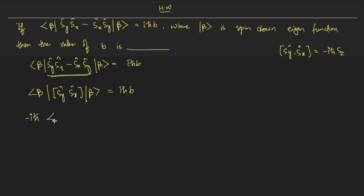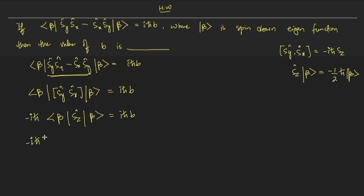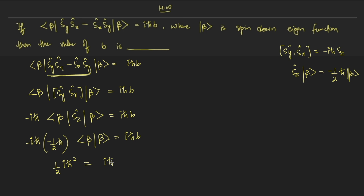So minus i and ℏ can be taken outside of the bracket, giving minus i·ℏ·(Sz·beta) = i·ℏ·b. When we operate the Sz operator on beta — since beta is a spin-down eigenfunction — its value is minus ½·ℏ·beta. Substituting that value: minus i·ℏ × (minus ½·ℏ) × beta = i·ℏ·b. The bracket gives 1 since it's a normalized wave function.